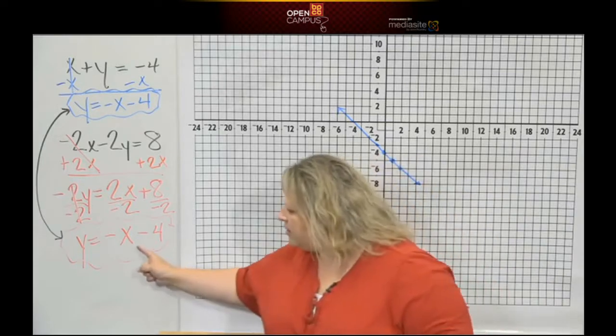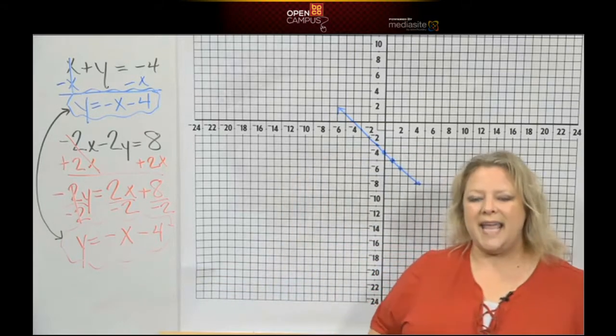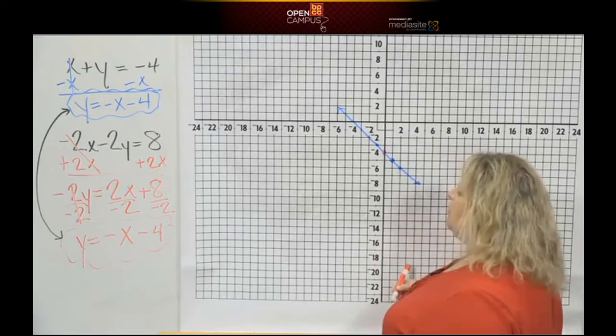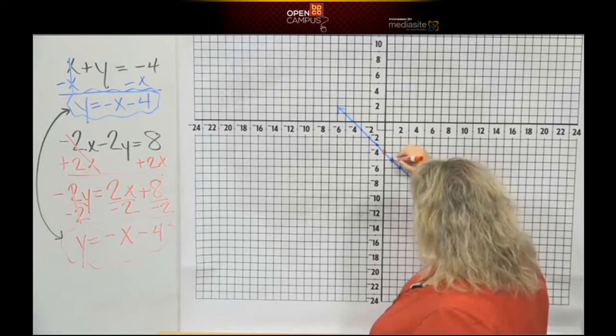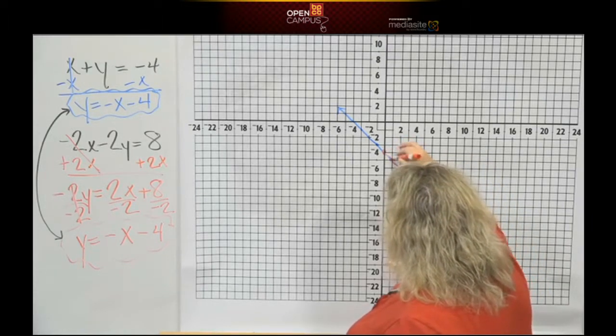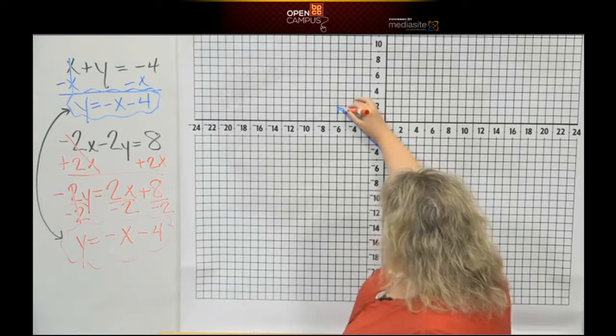So when I go down here to graph this line, it's the same line. So watch what happens. I start at negative 4. My slope is negative 1, so I count down 1 and over 1. Oh my goodness, what am I doing? I'm drawing on top of the line that I just drew.